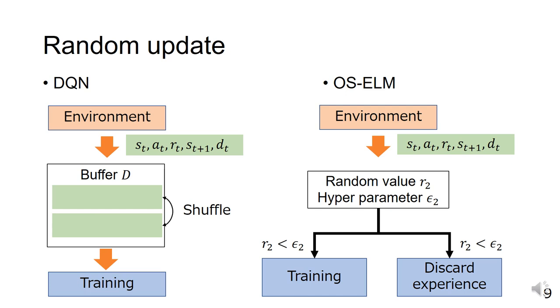The random update technique is the solution to this problem. Specifically, it eliminates the replay buffer used in DQN. Please note that since this technique discards experience probabilistically, it can mitigate the time series dependency on the experience.